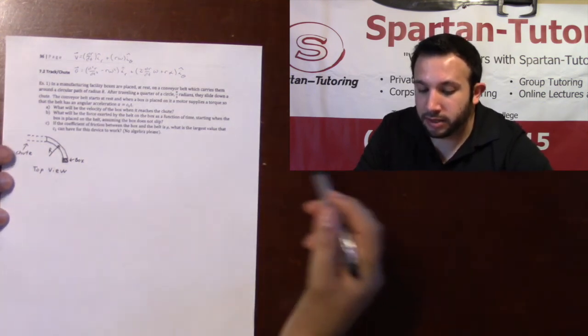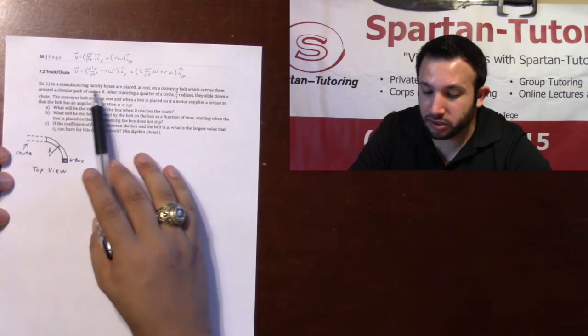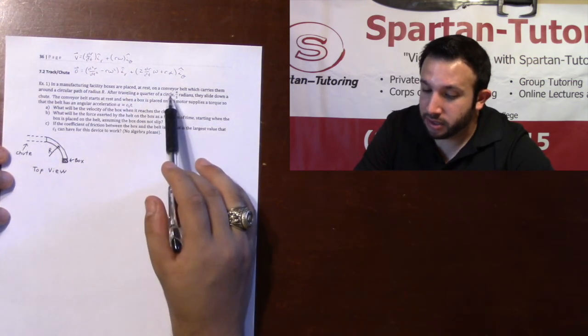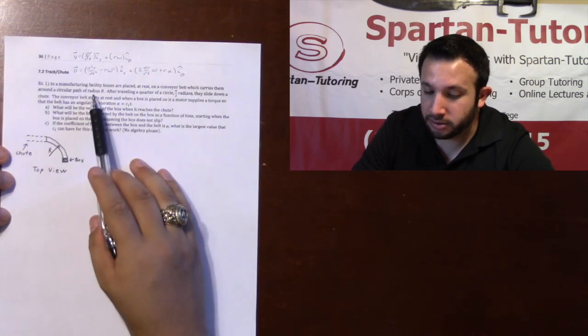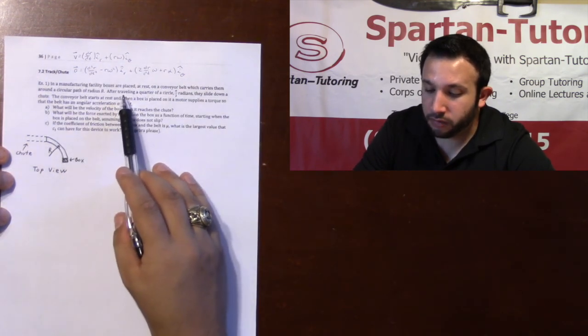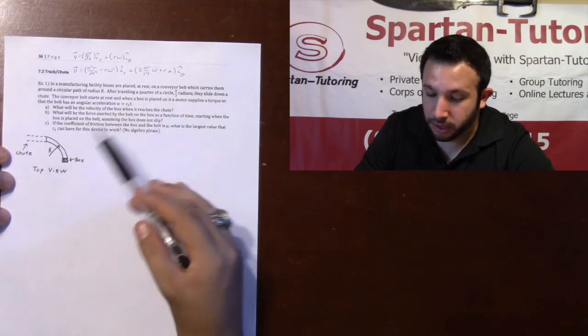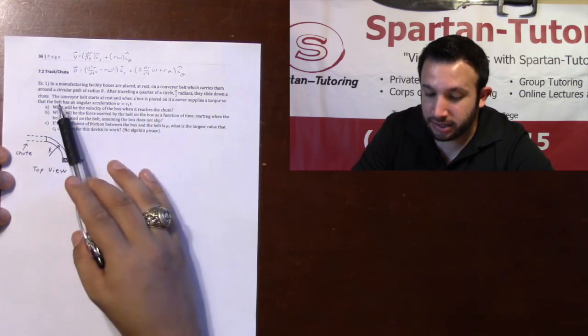Taking a look at number one, it says that in a manufacturing facility, boxes are placed at rest on a conveyor belt which carries them around a circular path of radius r. After traveling a quarter of a circle, that's pi over two radians, they slide down a chute.